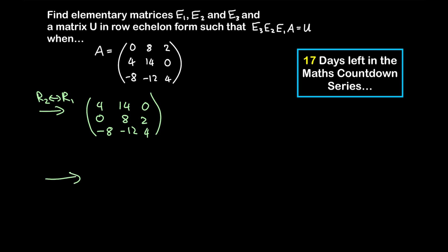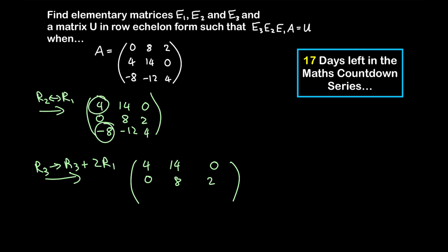To fix this, we replace row 3 with row 3 plus 2 times row 1. Row 1 stays as 4, 14, 0 and row 2 stays as 0, 8, 2. For row 3: negative 8 plus 2 times 4 gives 0; negative 12 plus 2 times 14 gives 28 minus 12, which is 16; and 4 plus 2 times 0 remains 4. So the first entry in row 3 is now 0, which is good.